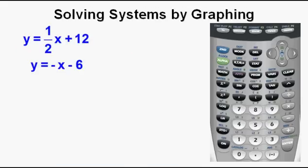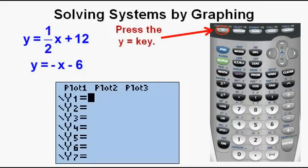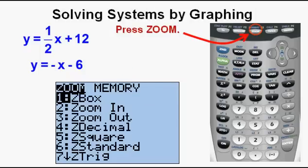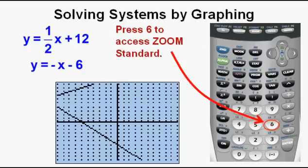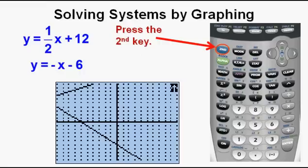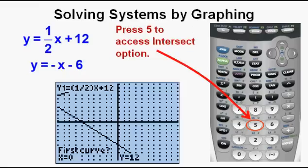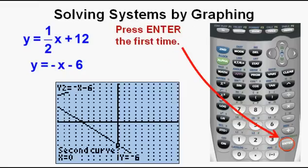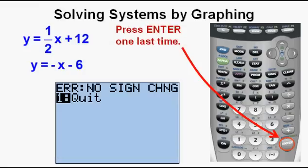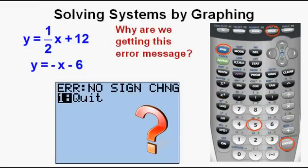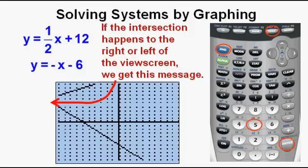Now we'll look at this system of equations: y equals one-half x plus 12 and y equals negative x minus 6. Press the y equals key to access the function editor and enter the functions. Press the zoom button and press 6 for zoom standard — this always gets you back to a standard view screen. Press the second key, then the trace key to access the calc menu, and press 5 for intersect. Press enter three times. We get an error message — no sign change — because the intersection takes place outside the field of our view screen.